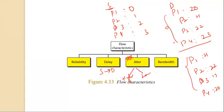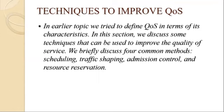Bandwidth is the total number of bits sent per second. Different applications need different bandwidths — video conferencing needs millions of bits per second to refresh, while email may not need the same amount. Now we move to techniques to improve quality of service. There are four common methods: scheduling, traffic shaping, admission control, and resource reservation.